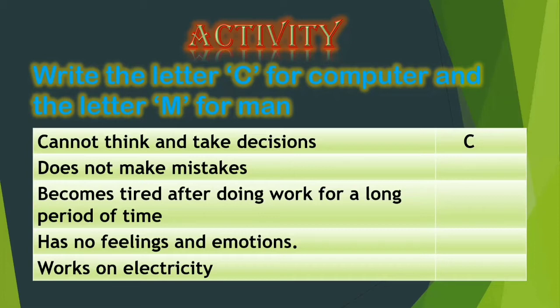Now the second one: does not make mistakes. So who will not make mistakes, computer or man? It is computer. You have to write C. Next one: becomes tired after doing work for a long period of time. So who will get tired after doing the work, man or computer? It is man. So you have to write M.